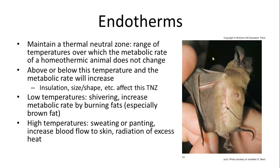Beyond the thermal neutral zone, if the temperature is too low, endotherms will shiver, increasing metabolic muscle activity which produces heat as a side effect. They may also burn fat — especially brown fat, which has lots of mitochondria and can produce a lot of energy as heat. At high temperatures they may sweat, taking advantage of evaporative cooling. Some endotherms without sweat pores will pant or breathe out of their mouth, getting evaporative cooling off the tongue. Others, such as the free-tailed bat, radiate heat from blood vessels along their wings while flying.